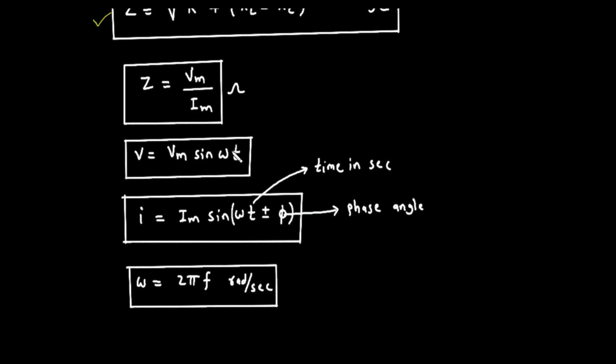V equals V sub M times sine of omega T. This is our input voltage from the source, a sine wave that varies with time. The arrow points out that T is time in seconds. I equals I sub M times sine of, in parentheses, omega T plus or minus phi. This is the equation for the current. It has the same frequency as the voltage, but it is shifted by the phase angle, phi. The arrow points out that phi is the phase angle. We use a minus sign if the current lags the voltage, an inductive circuit, and a plus sign if the current leads the voltage, a capacitive circuit.